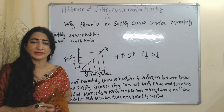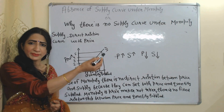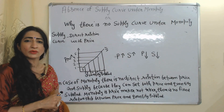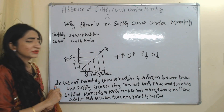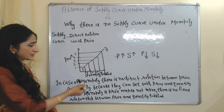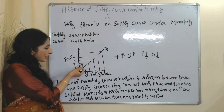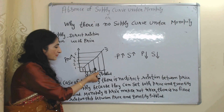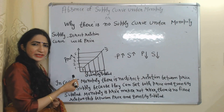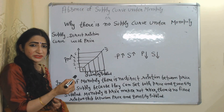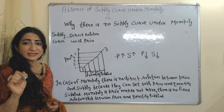As we know, the supply curve mainly tells us a direct relationship between price and quantity supplied. As price increases, quantity supplied also increases; as price falls, quantity supplied also falls. In this diagram, the x-axis shows quantity supplied and the y-axis shows price. As price is increasing, quantity supplied is also increasing.